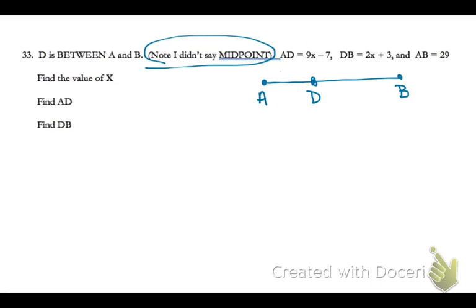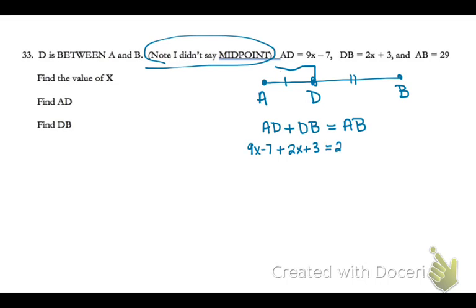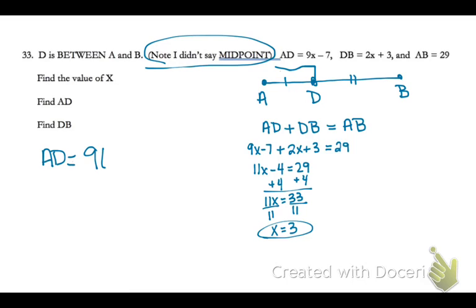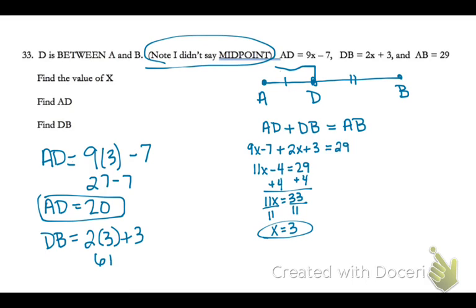Note that they did not say midpoint, so that just means you're going to use the segment addition postulate. AD plus BD has to equal the full length — the two parts equal the whole. So substitute in for AD and DB and AB, solve for X. Once you have X, substitute back in to solve for AD and DB.